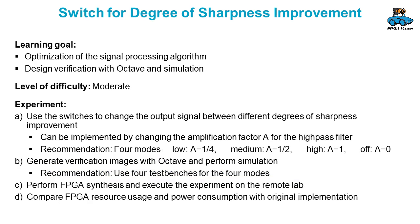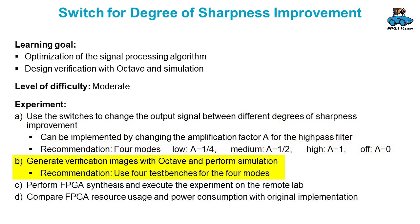An experiment that is a little bit more complex is using a switch to distinguish between different modes of sharpness improvement. In the video you saw that the high-pass filter for sharpness improvement has an amplification factor. You can use this to have different modes — for example, four modes. You then need to generate verification images with Octave. My advice is that you use different test benches for the different modes.